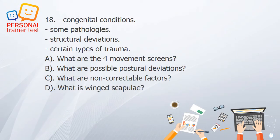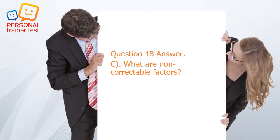Question 18. A. What are the four movement screens? B. What are possible postural deviations? C. What are non-correctable factors? D. What is winged scapula? Answer: C. Non-correctable factors include congenital conditions, some pathologies, structural deviations, and certain types of trauma.